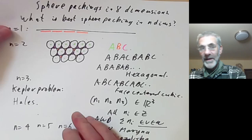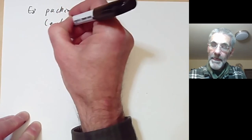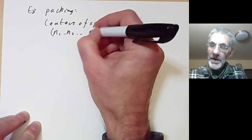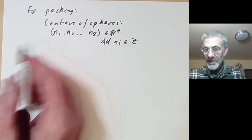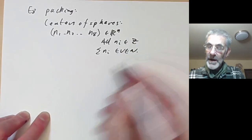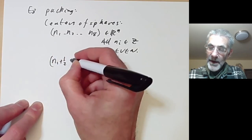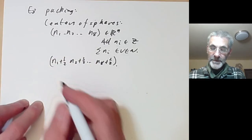So what is the best sphere packing in eight dimensions? It's something called the E8 packing. The centres of the spheres in eight dimensions are given by all coordinates (n1, n2, ..., n8) in R8 with all ni integers, except we throw away half of them — taking the sum of the ni to be even — just as in the three-dimensional case.